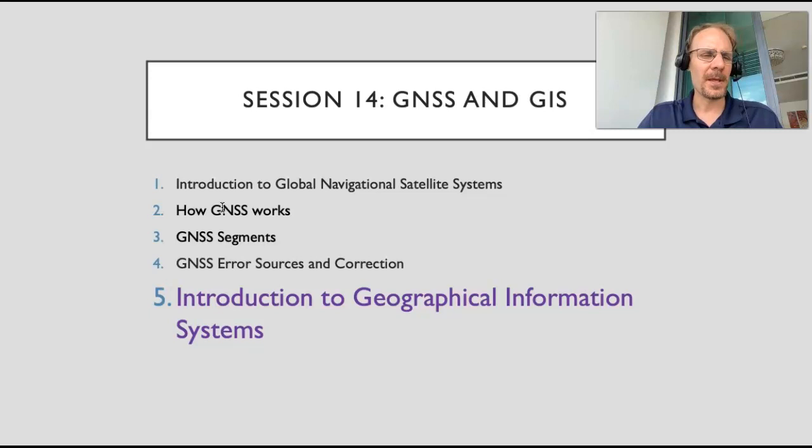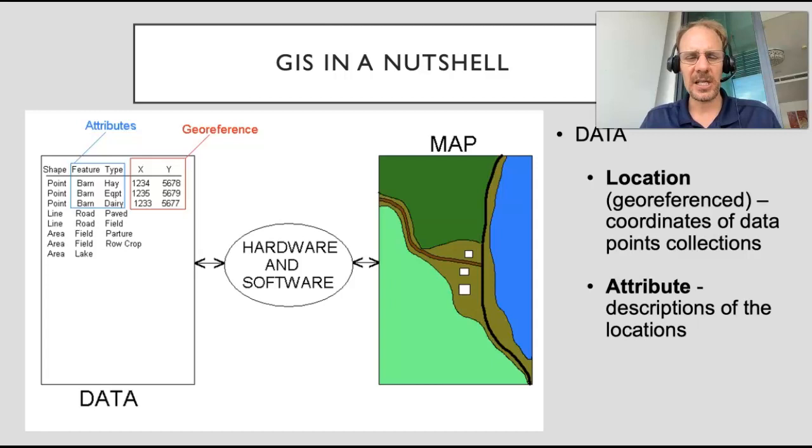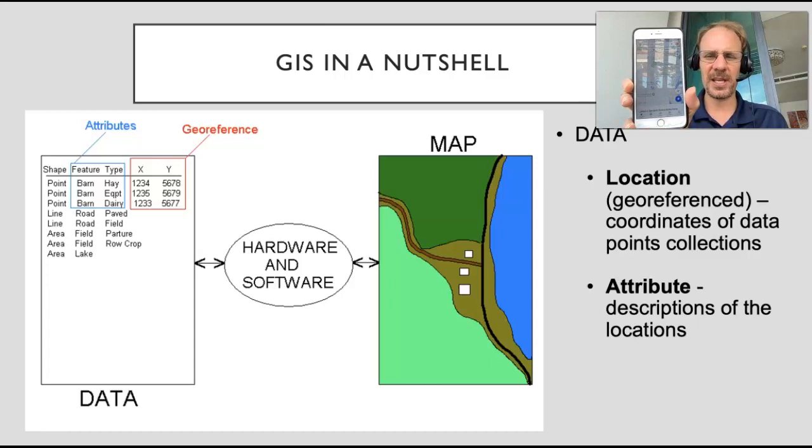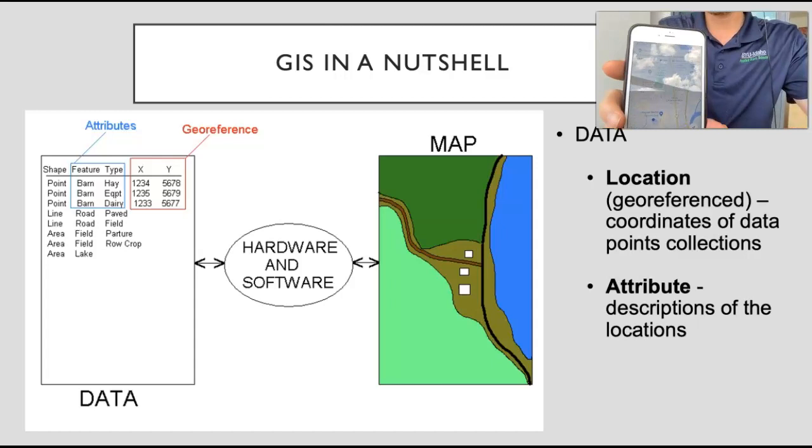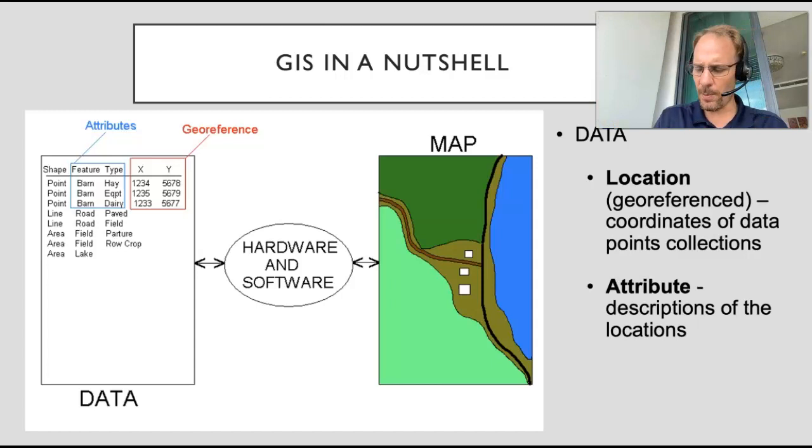This slide shows GIS in a very simple format and I want to first show you here on my phone screen. It's got somewhat of a glare so maybe you can't quite see what I'm trying to show here. What you're seeing is Google Maps and Google Maps is a GIS system. There are many other mapping software or apps that you might have downloaded on your smartphone. They're a GIS.